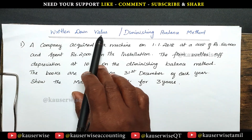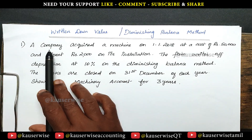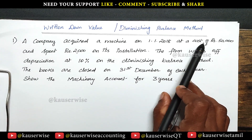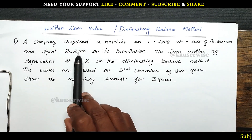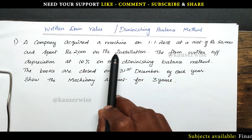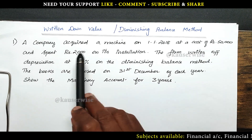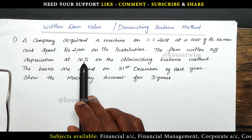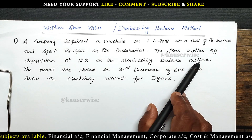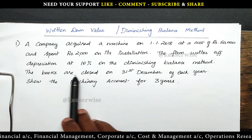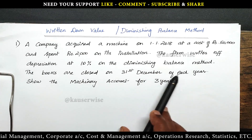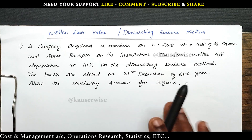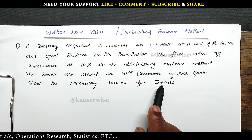See the problem. Written down value method, or diminishing balance method. A company acquired a machine on 1-1-2018 at a cost of rupees 50,000 and spent 2,000 on its installation, so total cost of the machine is 52,000. The firm writes off depreciation at 10% on the diminishing balance method, that is WDV method. The books are closed on 31st December of each year. Show the machinery account for 3 years.